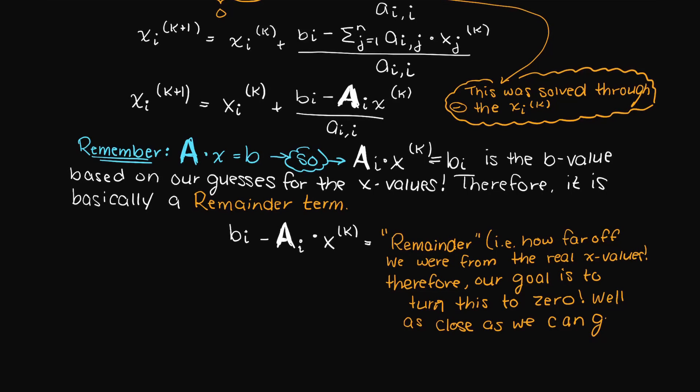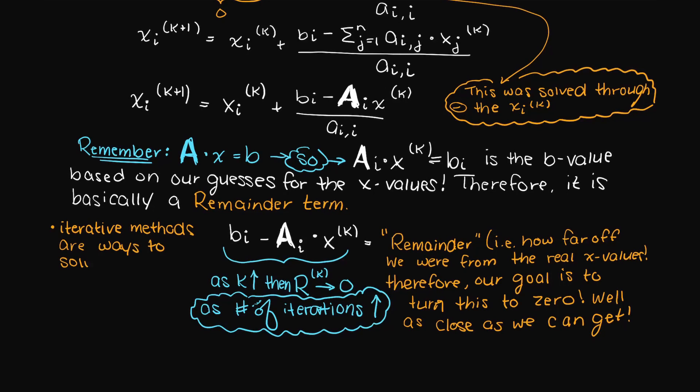So our goal in iterative methods is to find ways of turning this remainder term to 0. And that's all iterative methods are - they are ways of solving our matrices without performing the series of steps that we had to do in direct iterative methods. So we no longer need to make it a special triangular matrix and solve that way; we just solve by rows.